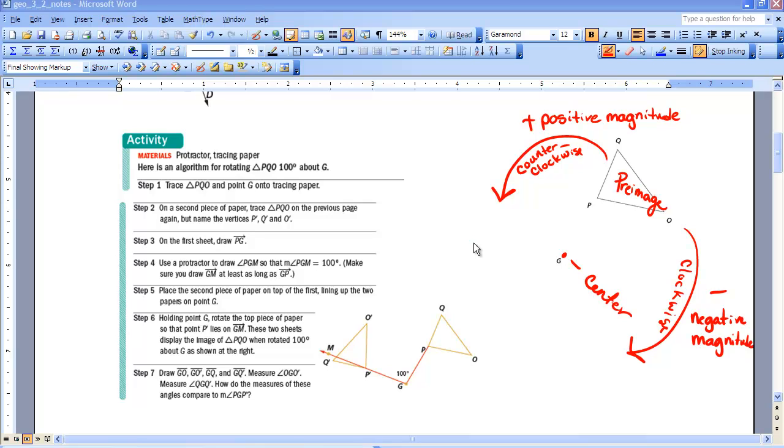So all rotations that have a positive rotation, or we also call that a magnitude, if it has a positive magnitude, it goes counterclockwise. If I wanted to rotate it in negative 100 degrees, then I would actually rotate it clockwise.